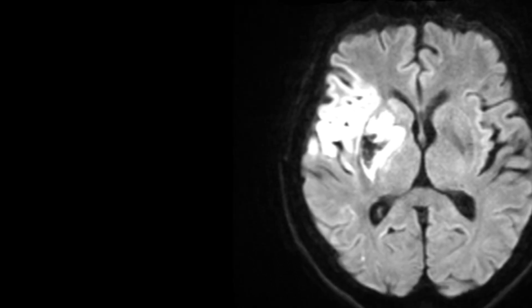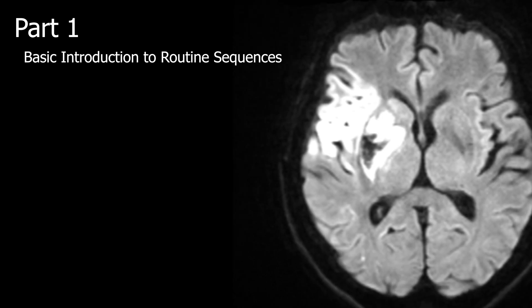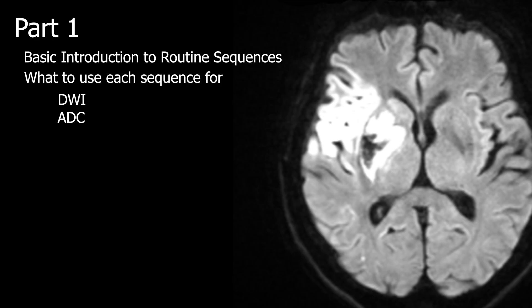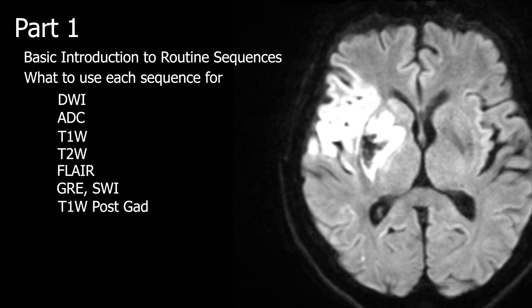In this first video, part one, we'll start with a very basic introduction to common sequences used in routine brain MRI, including what to use each of the sequences for. We'll cover diffusion-weighted imaging and ADC maps, T1-weighted imaging, standard T2-weighted imaging, T2 FLAIR, gradient echo and susceptibility-weighted imaging (SWI), and T1-weighted post-gadolinium imaging.